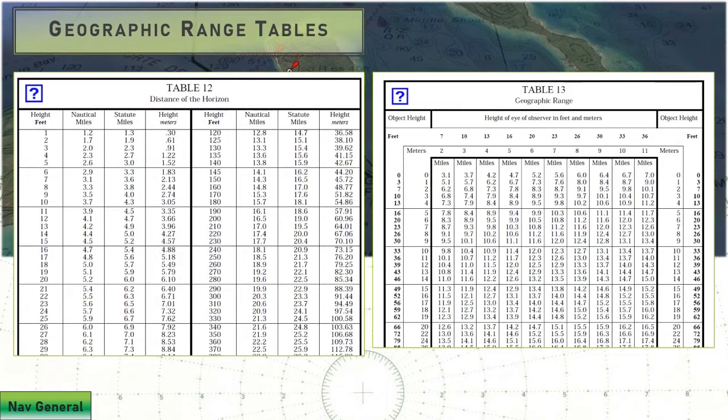Now we're going to look at how to calculate the geographic range of a light, where we take those components of height into account. This is a straight mathematical formula. We have two tables in Bowditch that deal with this formula. Table 12 is going to give you the distance of one particular height in feet or meters, giving you either nautical or statute miles. I like table 12 because of that. Let's do an example here on table 12 with a height of 20 and a height of 11.